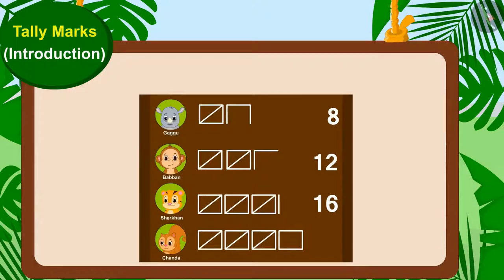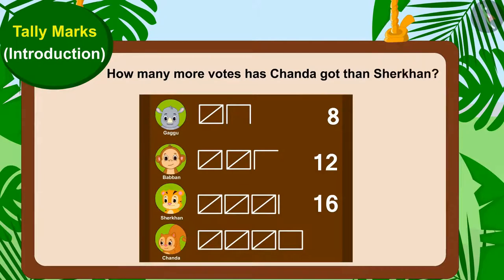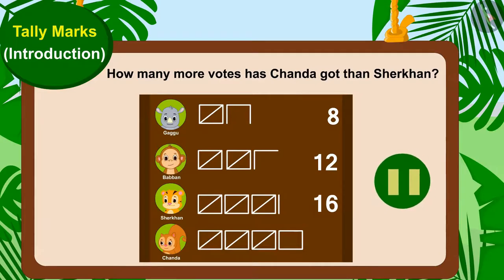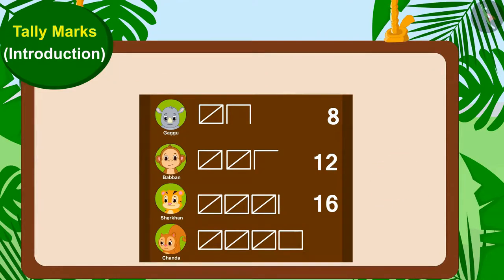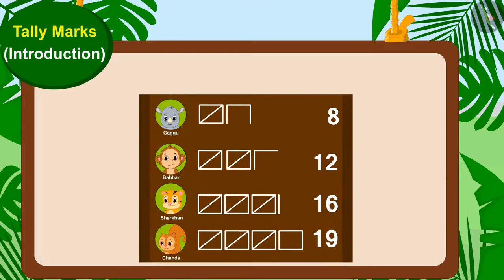Now, can you tell how many more votes has Chanda got than Shere Khan? If you wish to, you may stop the video and find the answer. Yes, Chanda has received 19 votes and Shere Khan has got 16 votes. This means Chanda got three more votes than Shere Khan.